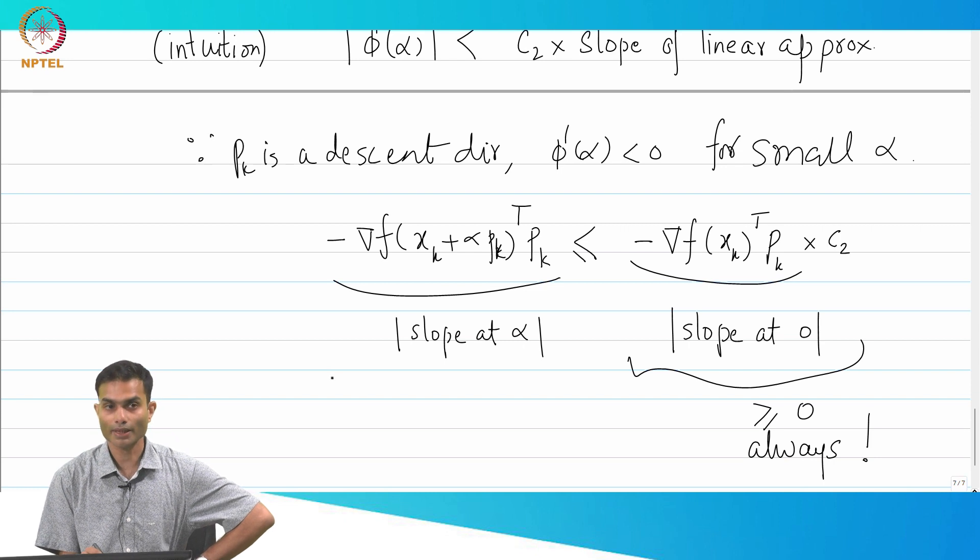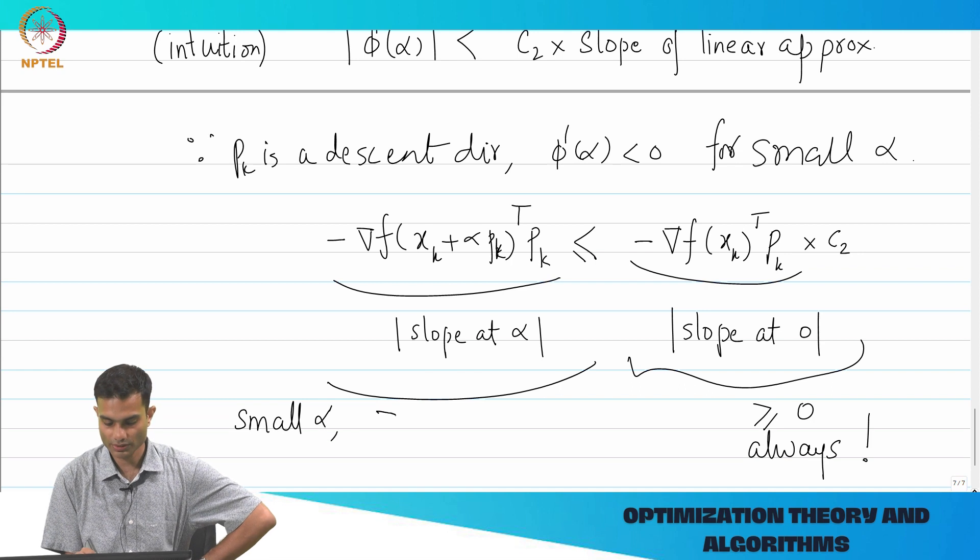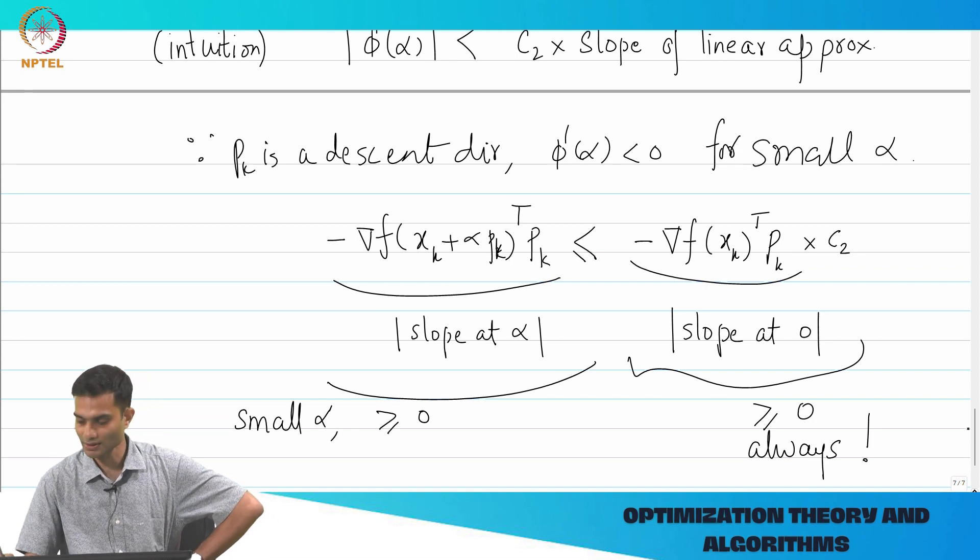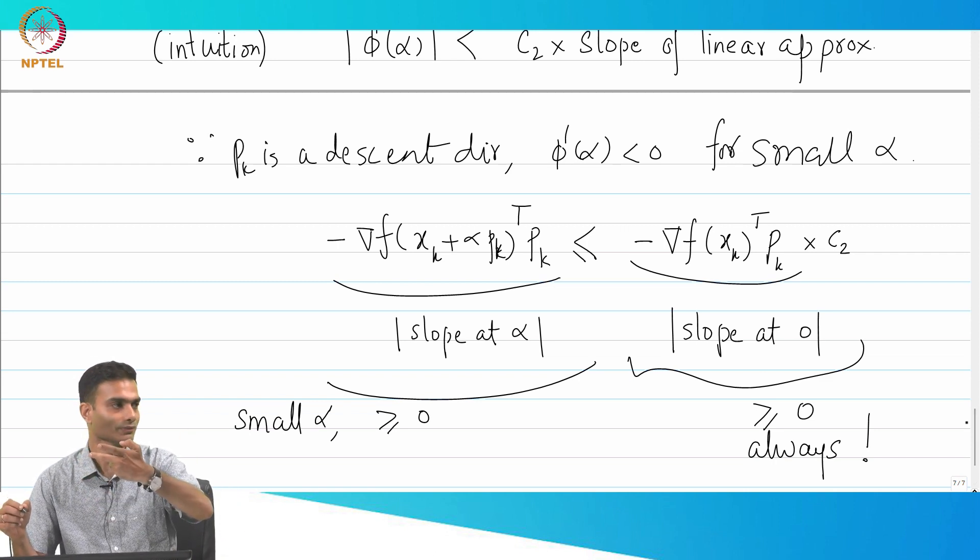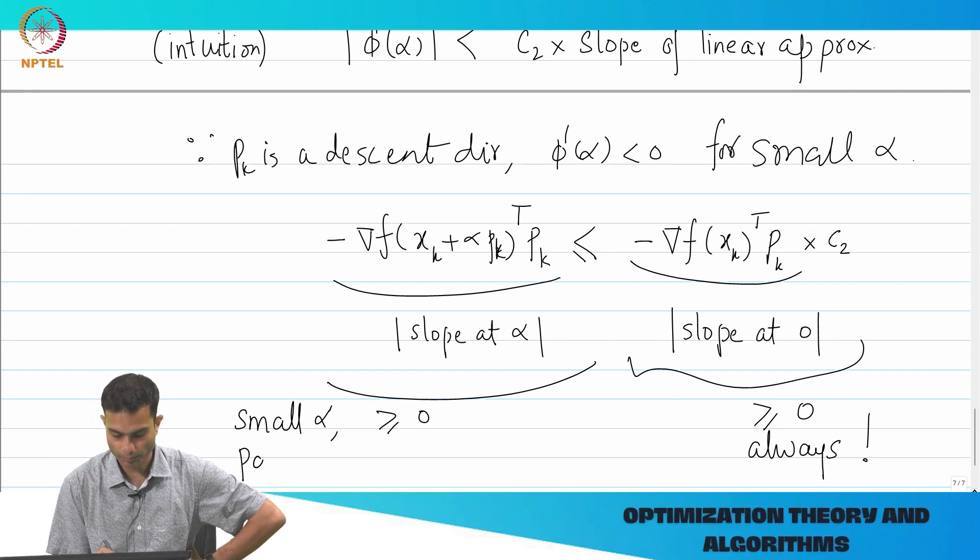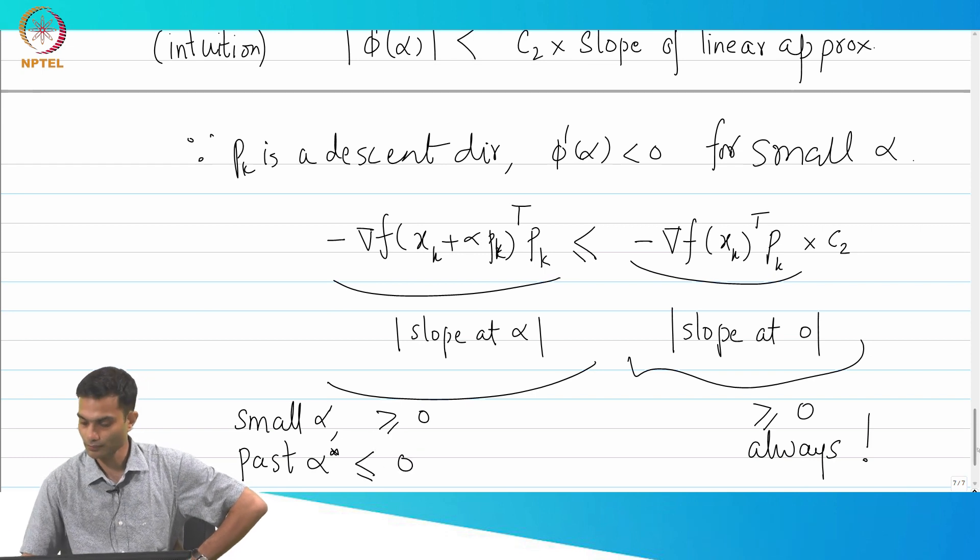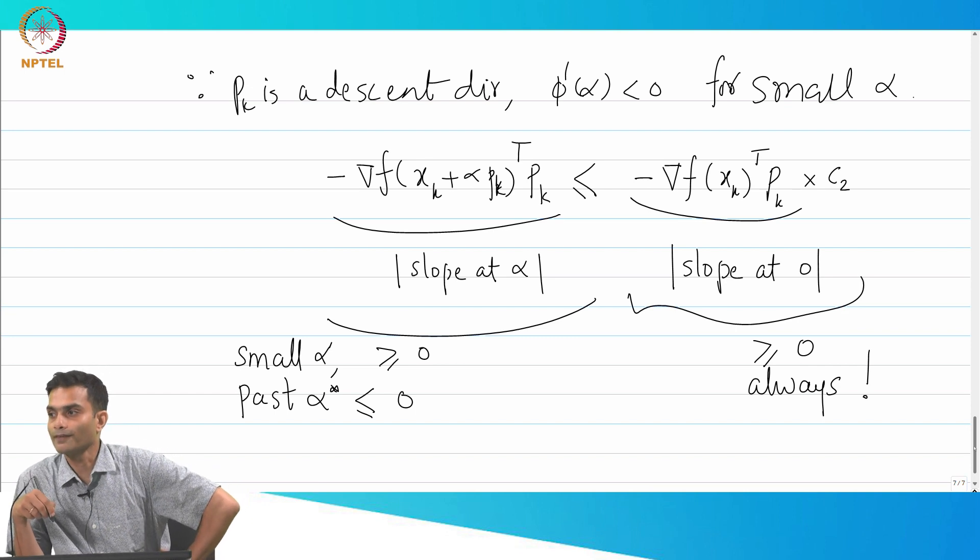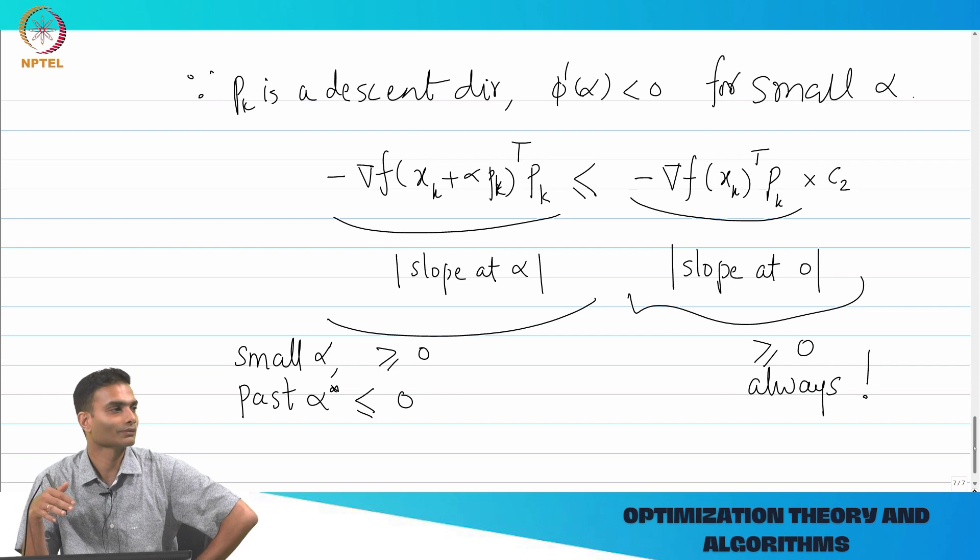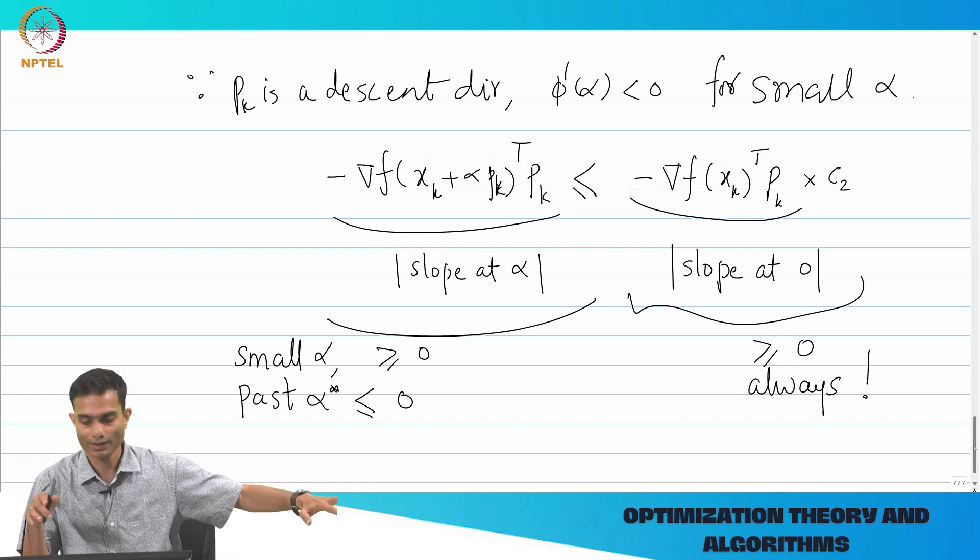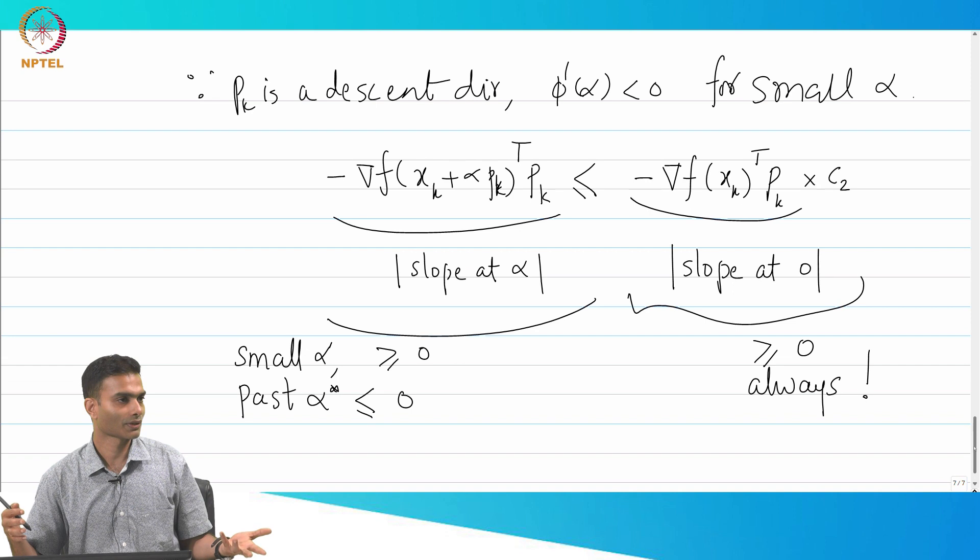On the other hand, when I go past, for small α this is greater than or equal to 0 and that is when this inequality made sense. The moment I go past a stationary point, what happened? Flipped sign. So past α*, this became less than or equal to 0. If this became less than 0, is there any problem in satisfying this inequality? I have minus 100 on the left, less than or equal to plus 50. There will never be a problem with this.